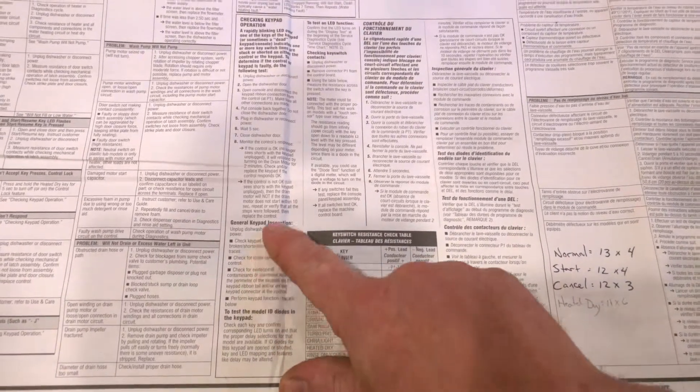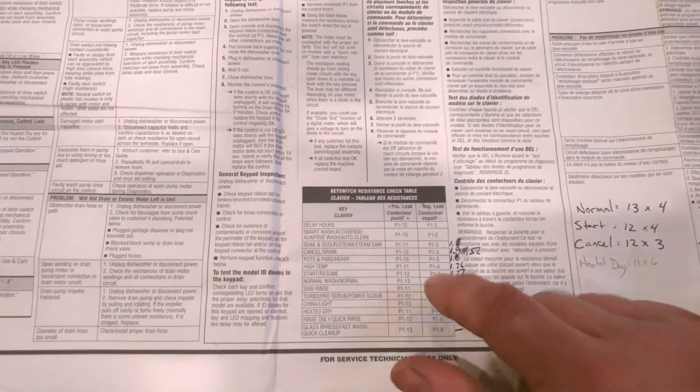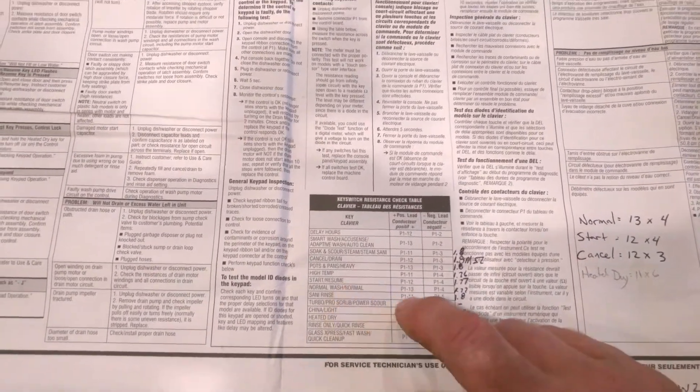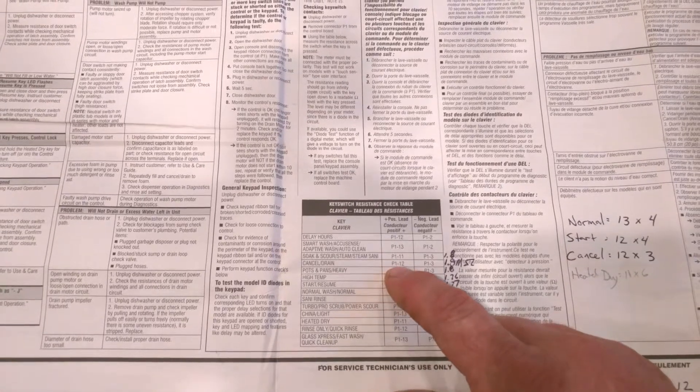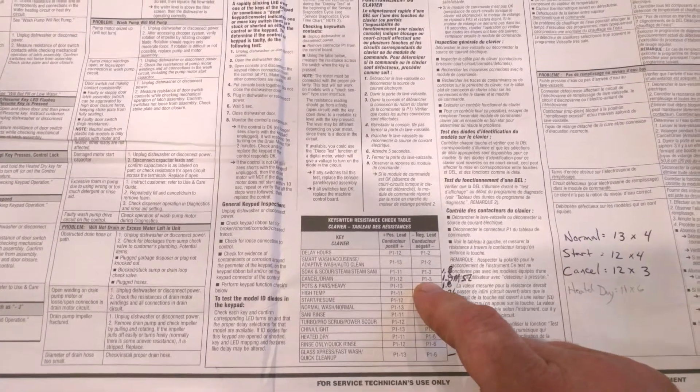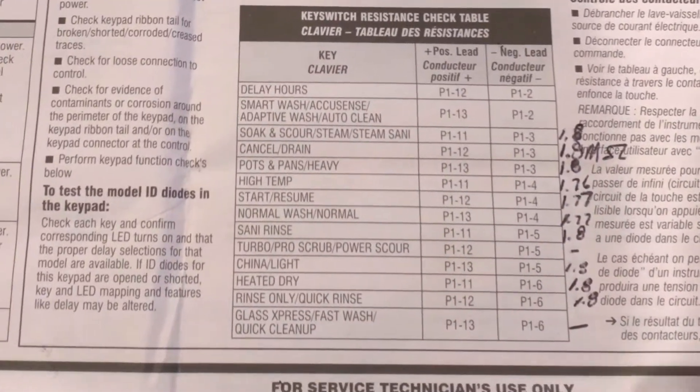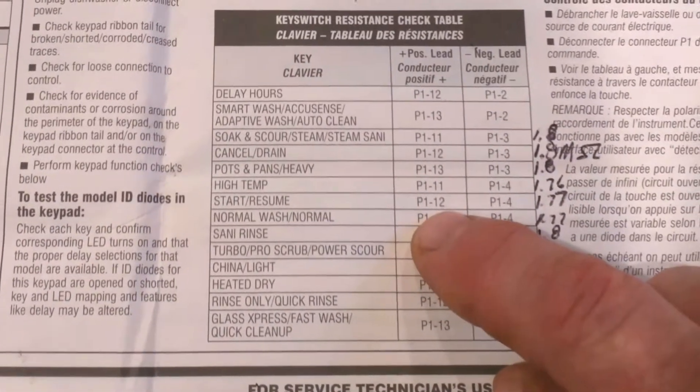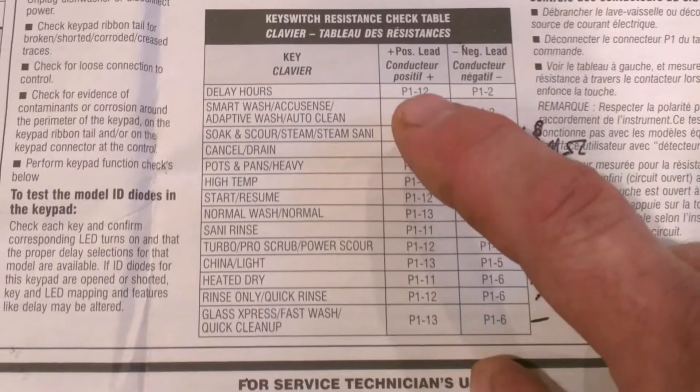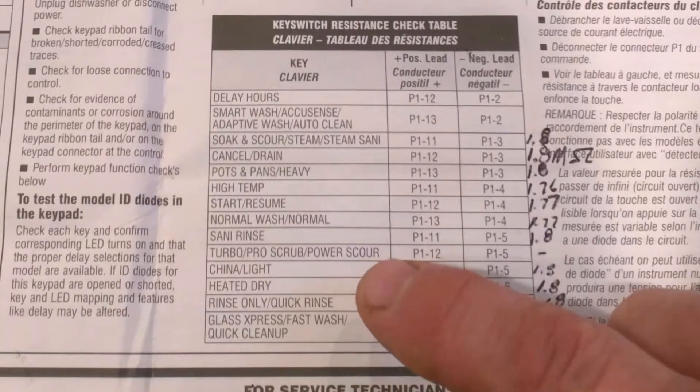It goes through all of that here in the specifications. The important part is it tells you what pins do what functions. For example, if you want to drain it, you jump from pin 12 to pin 3. My solution is to just put a momentary button between the pins listed here for certain cycles. We're going to do the normal cycle, heated dry, a button to cancel and drain it, and a button to start the cycle.